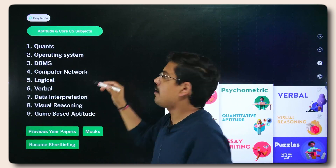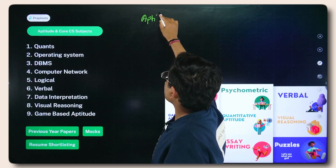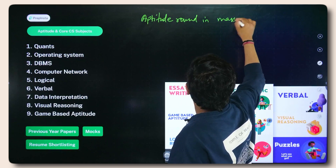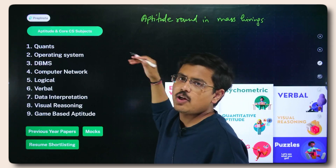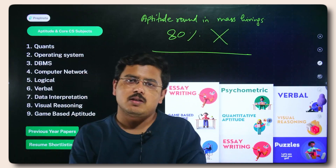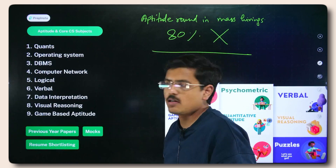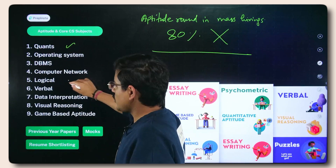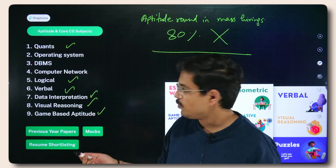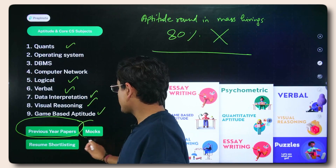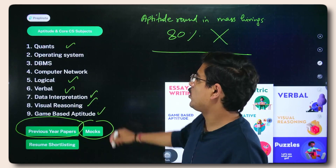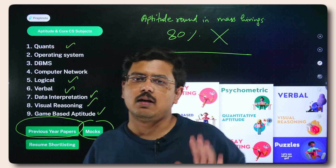Work on aptitude practice — when you sit for any exam, you'll have an aptitude round in mass hirings. 80% of people get rejected straight away from the first written test, which generally includes aptitude. So work on your quants, logical reasoning, verbal reasoning, data interpretation, visual reasoning, and game-based aptitude. The way to perfect that is through previous year papers and mock tests — very, very important.